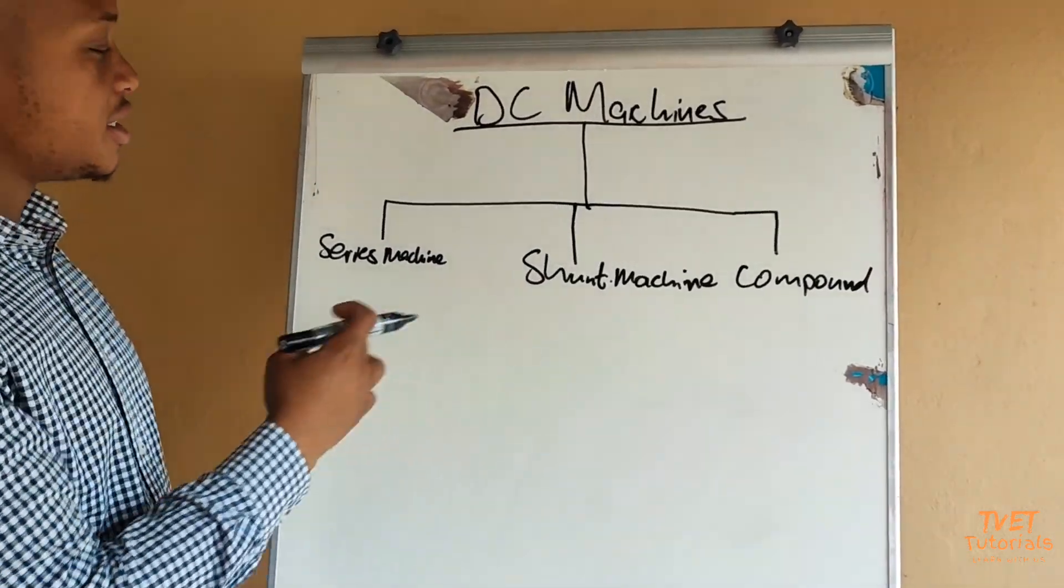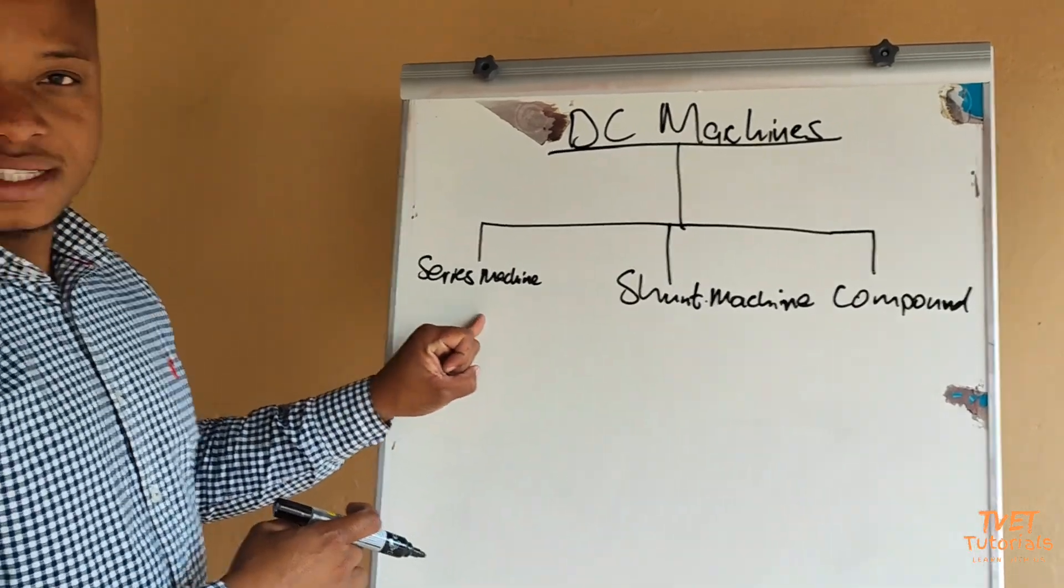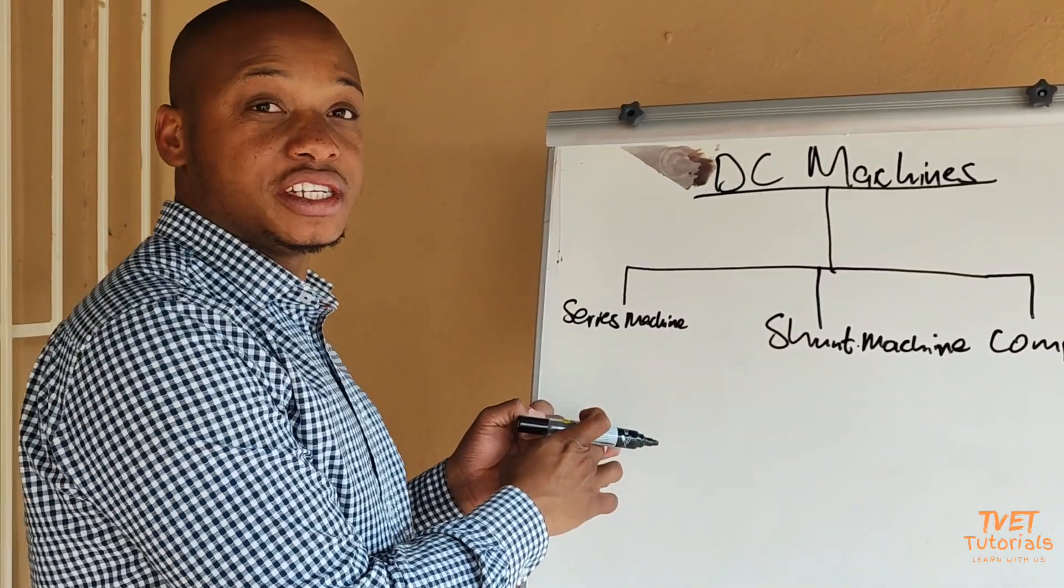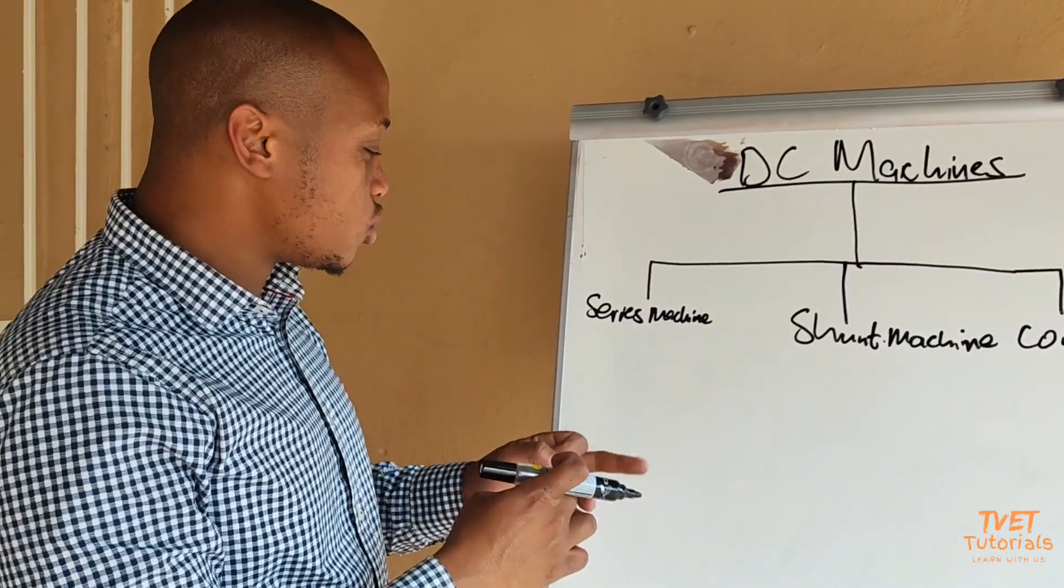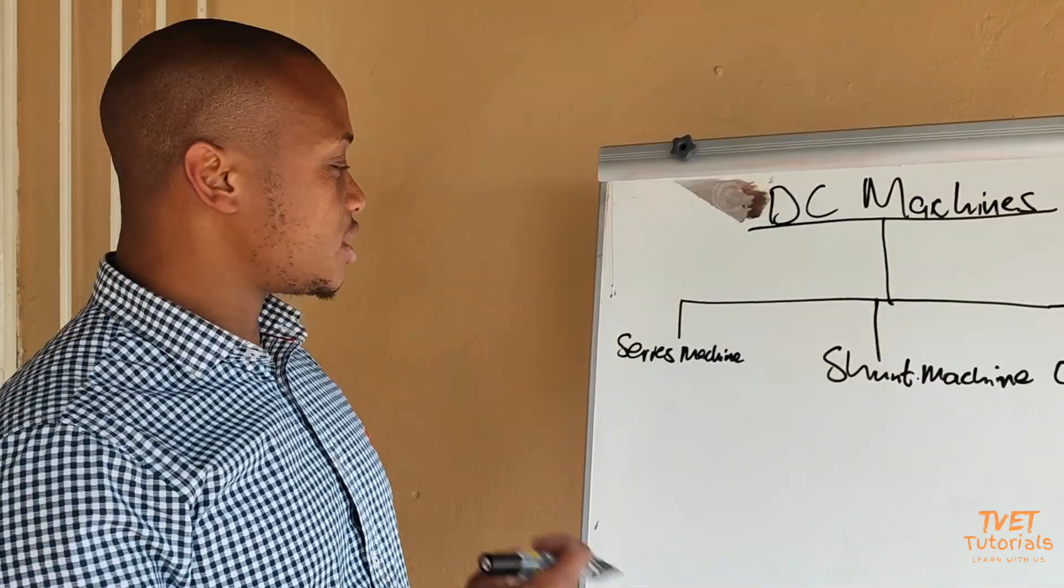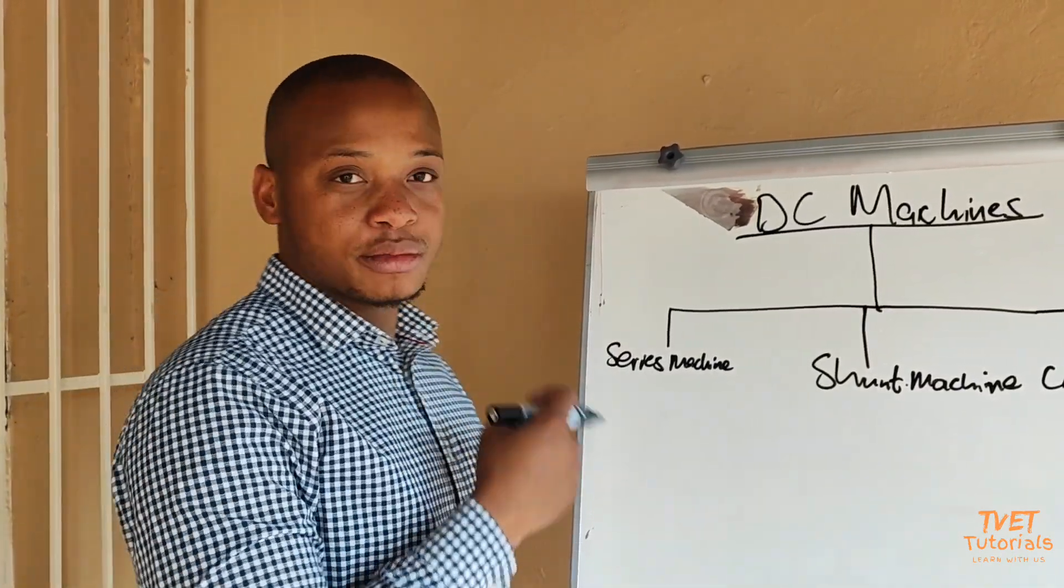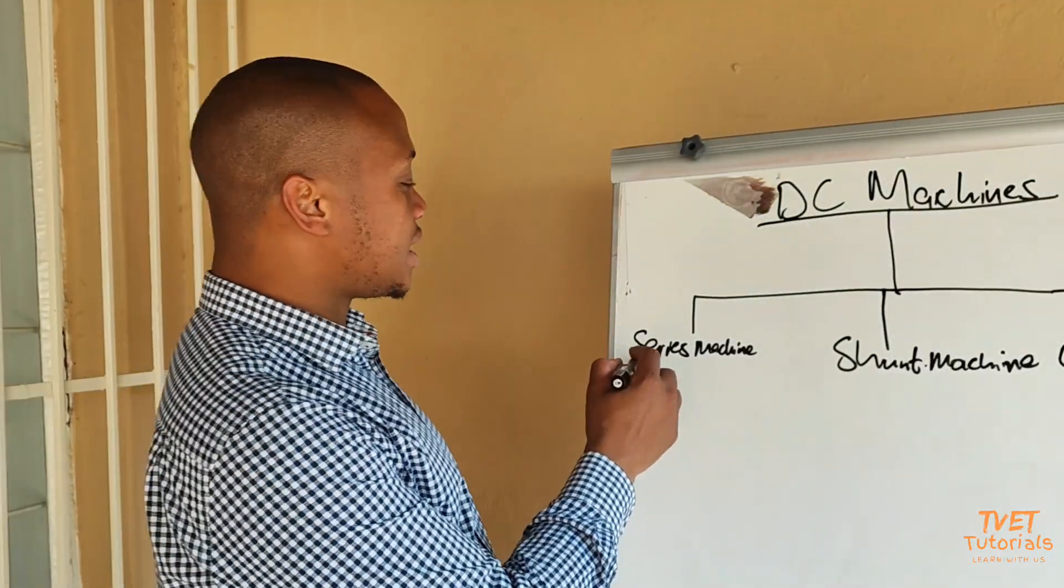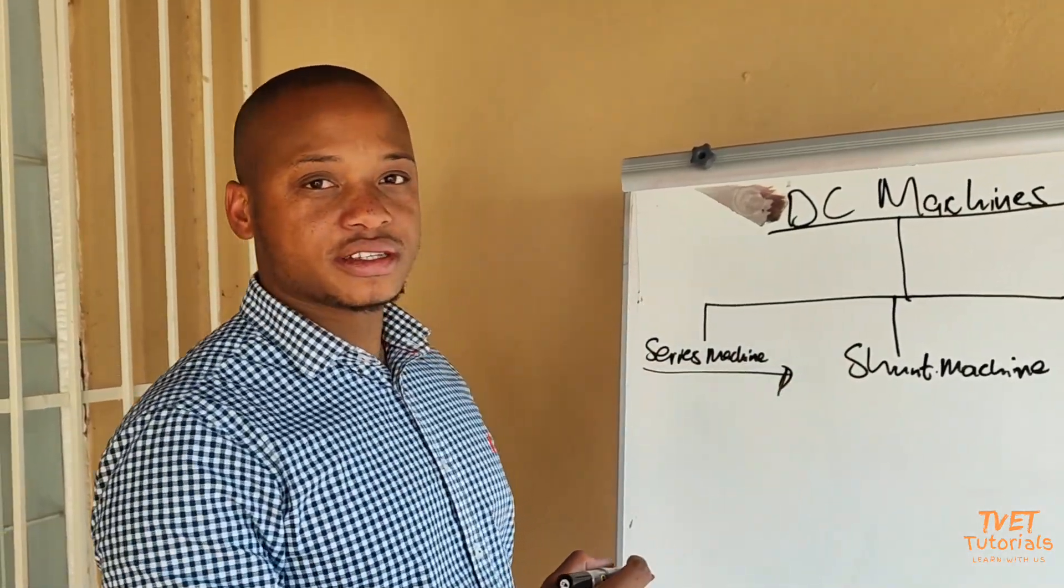We look at each of these machines individually. We look at their circuit diagrams, the equations that are there, and also a short calculation explaining how the machine operates. So we shall start with the series connected machine.